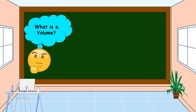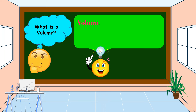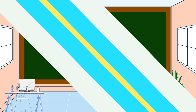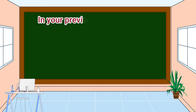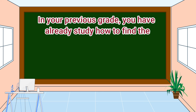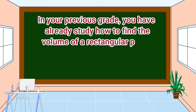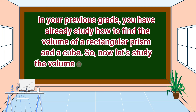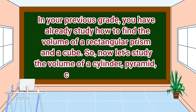What is volume? Volume is the amount of space in a certain 3D or 3-dimensional object. In your previous grades, you already studied how to find the volume of a rectangular prism and a cube. So now, let's study the volume of a cylinder, pyramid, cone, and sphere.